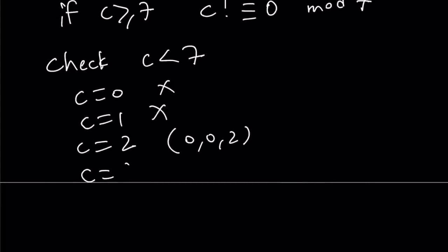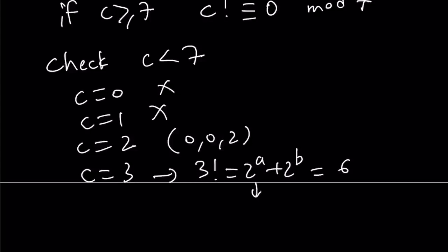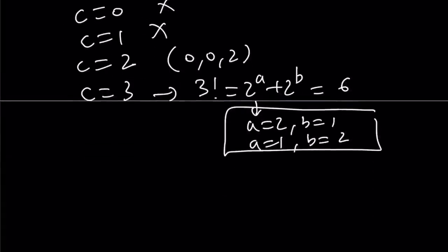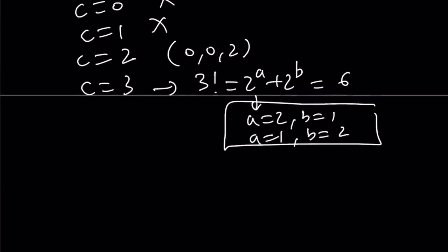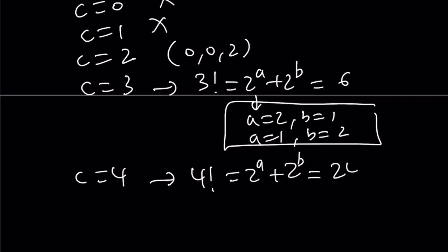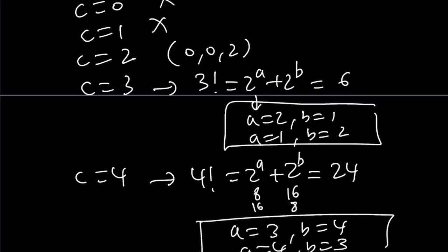Let's test c equals 3. If c equals 3, then 3 factorial equals 2 to the power of a plus 2 to the power of b, which is 6. Notice that 4 plus 2 equals 6, so we get a equals 2, b equals 1, or a equals 1, b equals 2 — since a and b are interchangeable. That gives us solutions (1, 2, 3) and (2, 1, 3). For c equals 4, we get 4 factorial equals 24. We can write 8 plus 16 equals 24, giving a equals 3, b equals 4, or a equals 4, b equals 3 — two more solutions.